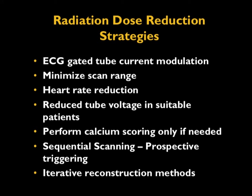The most common dose reduction strategy is ECG-gated tube current modulation. Other strategies include minimizing the scan range, heart rate reduction for better acquisition, reduced tube voltage in suitable patients to automatically reduce dose and increase contrast, performing calcium scoring only when needed, and utilizing sequential scanning or prospective triggering. Recently developed iterative reconstruction methods, when applied to cardiac CT, allow acquisition at very low dose exposure.